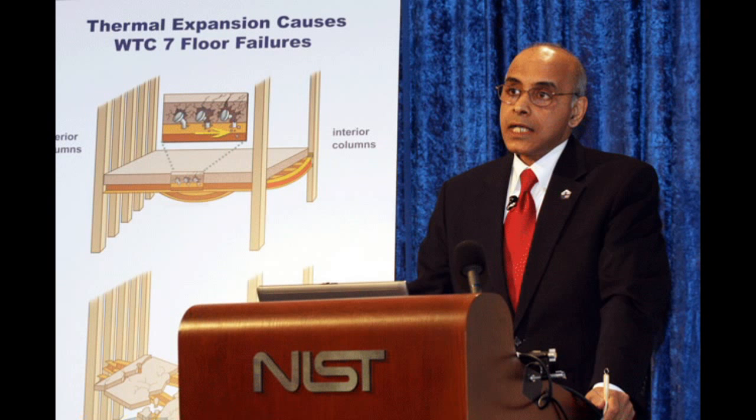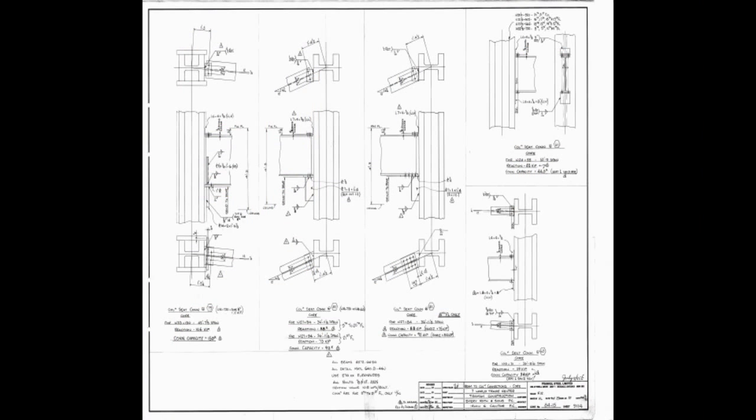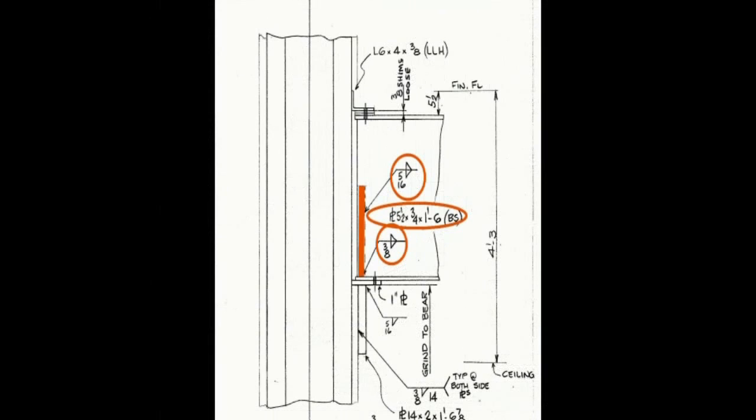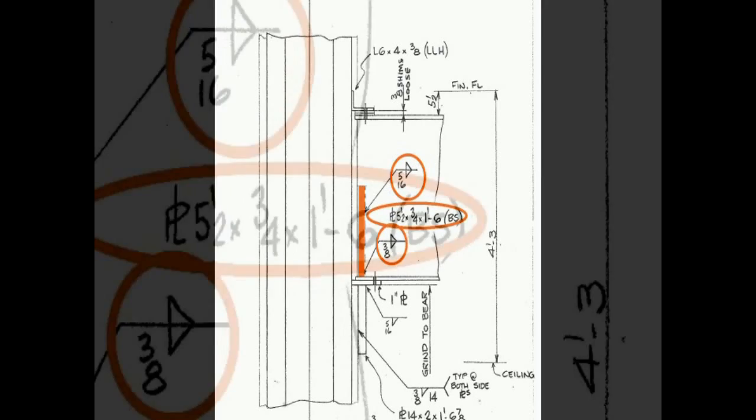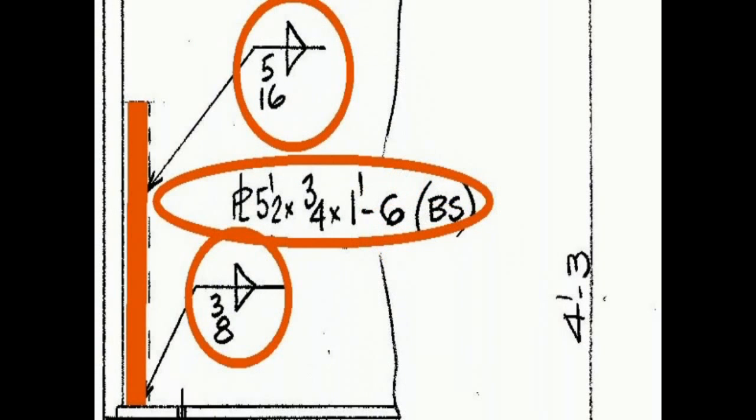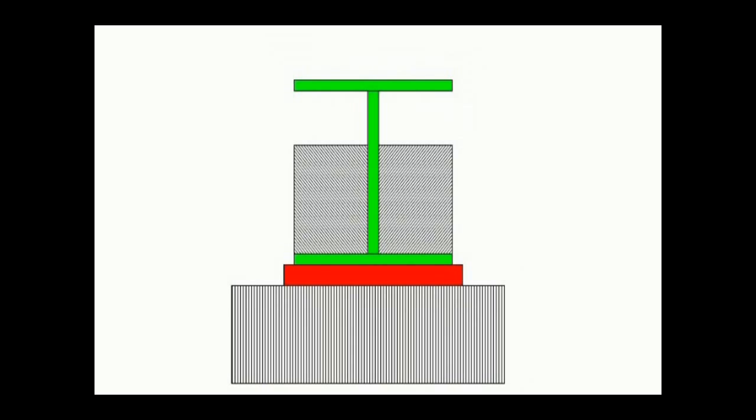So things don't look good for NIST's story, but just take a look at drawing 9.1.1.4. It details a plate to be added on both sides of the girder and calls it PL. As you can see in the drawing, PL measures 5.5 by 3 quarters by 1 foot 6 inches and it's welded at the bottom and the side. So now we have went from this to this to this and then this.